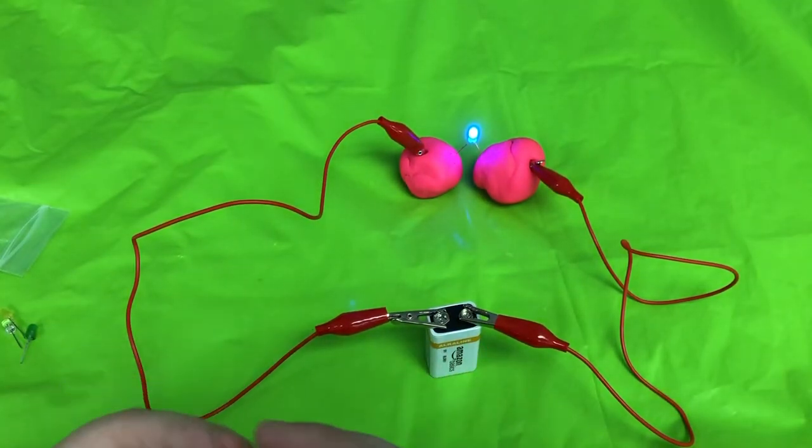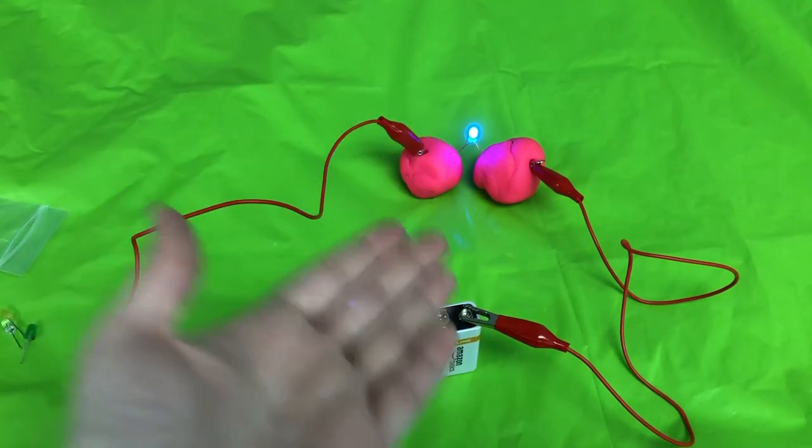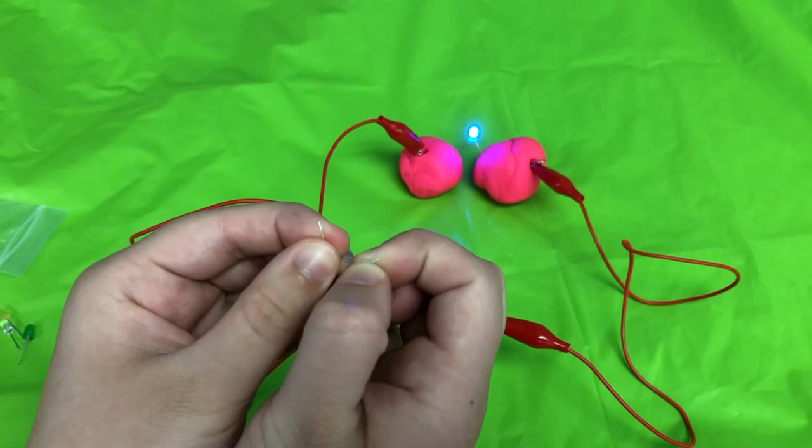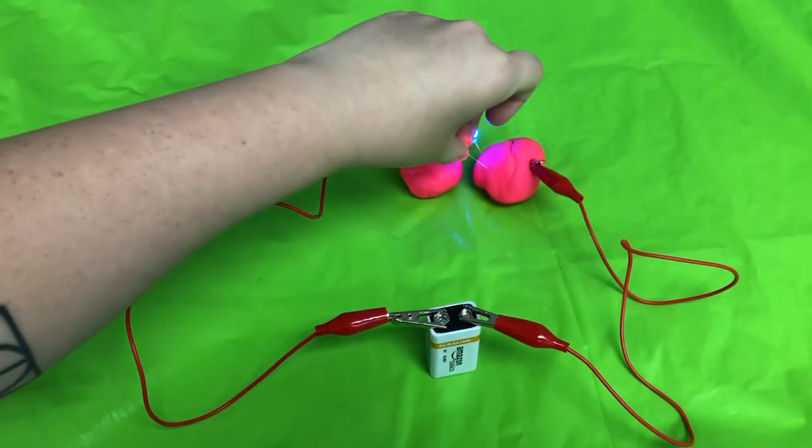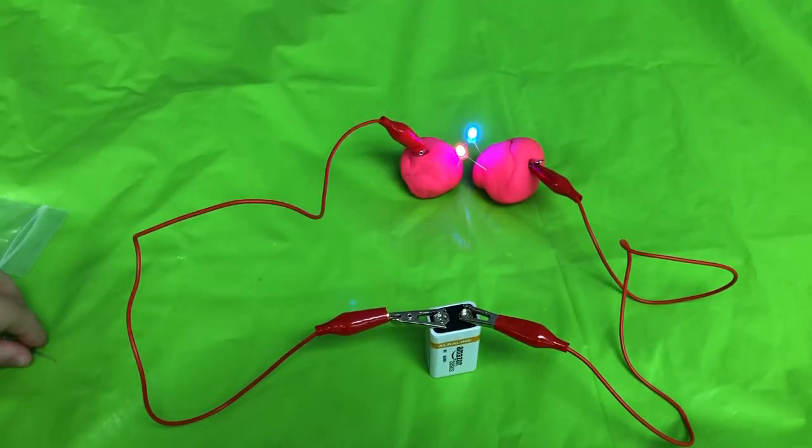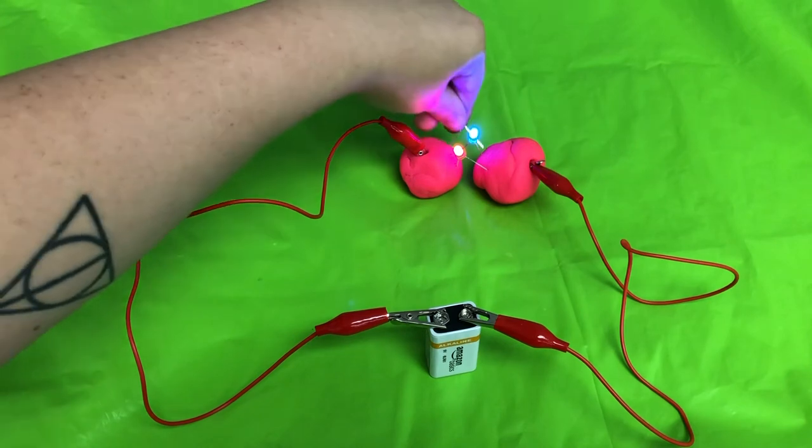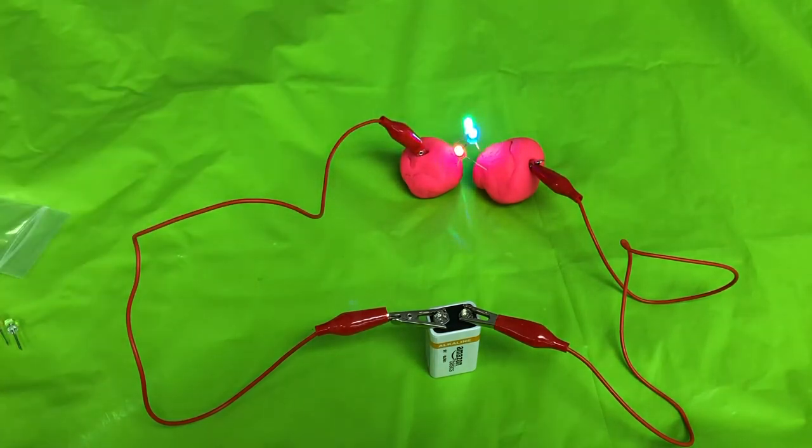Now there are a couple cool things that you can do once you get the basic setup of your circuit going. I'm going to take another LED light and you can add in more so you can do multiple lights. Do one more in there. So now I have three different LEDs attached to my Play-Doh circuit.